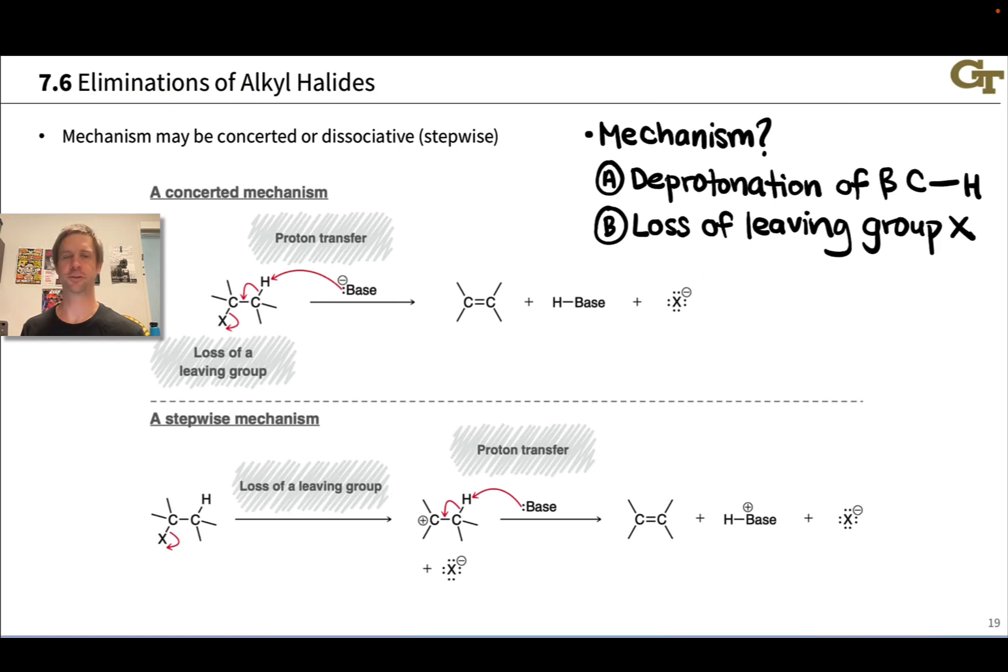In terms of the mechanisms of eliminations of alkyl halides, we noted there are two things that need to happen in this reaction: deprotonation of a beta CH and loss of the leaving group X. We can imagine concerted and dissociative mechanisms for this, analogous to the concerted and dissociative substitution mechanisms we've already seen. For example, in the concerted mechanism, deprotonation and loss of the leaving group occur all in one go. These first two arrows essentially represent deprotonation of the beta CH. Rather than landing those electrons on carbon though, we keep them going to form the pi bond between the alpha and beta carbons here. At the same time, the CX bond breaks toward X indicating loss of a leaving group. This concerted mechanism is known as E2. It is concerted in that both of these things are happening at the same time.